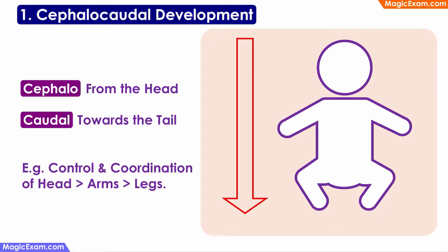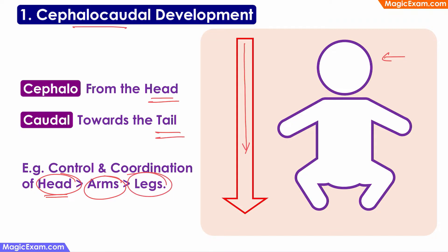The first important principle of development is cephalocaudal development. Cephalo means head and caudal means tail. This principle says that the development of the baby starts from the head and moves towards the tail. The brain is one of the first parts of the body to develop and the limbs develop later. After birth, the child will first learn to control the head, then the arms, and then the legs. So development starts from the top and moves towards the bottom of the body — this is cephalocaudal development.